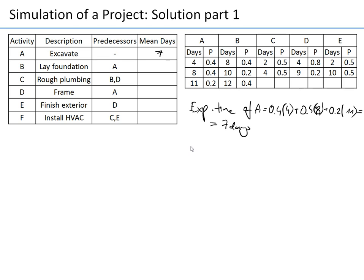We repeat this for activities B, C, D, E, and F. For F we know it's exactly five days. For the other activities, the computed mean durations are: 10, 3, 5, and 6 days respectively. Now we use the Critical Path Method with these mean values as if they were exact, not expected, numbers of days.